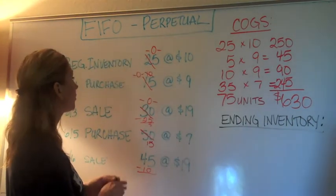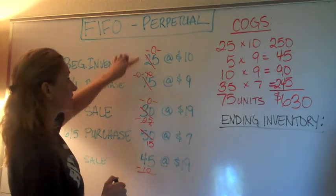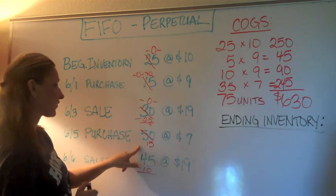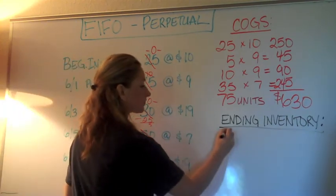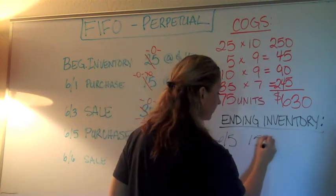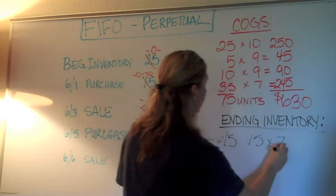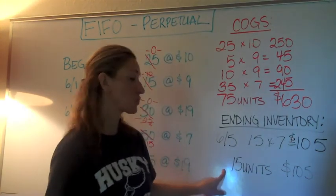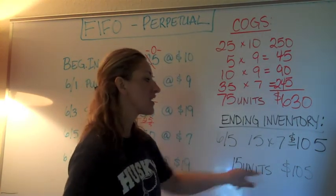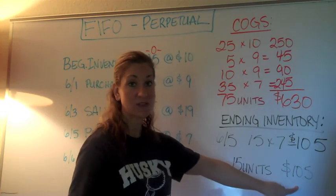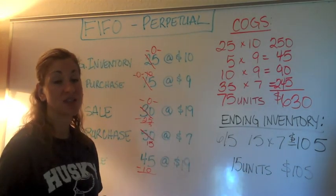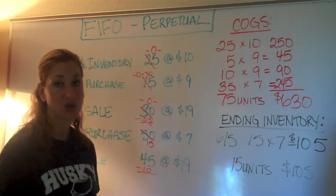Now let's calculate our ending inventory — what we have left. This is fairly simple because earlier layers are zeroed out. All we have left is from the June 5th purchase: 15 units at $7, giving us an ending inventory value of $105. This completes our first in, first out calculation using the perpetual method of inventory valuation.